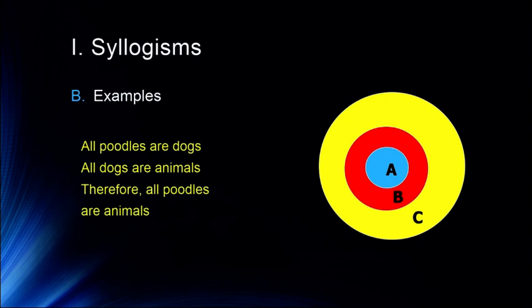Back to our premise: all poodles are dogs, all dogs are animals, therefore all poodles are animals. If poodles are a subcategory of dogs, and dogs are a subcategory of animals, therefore all poodles are animals.